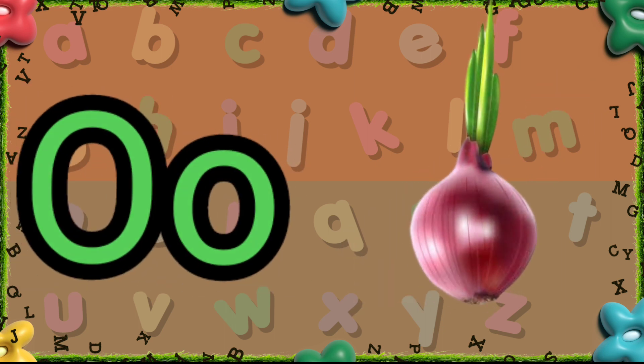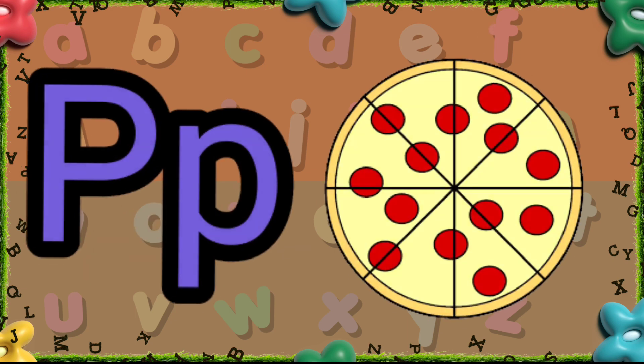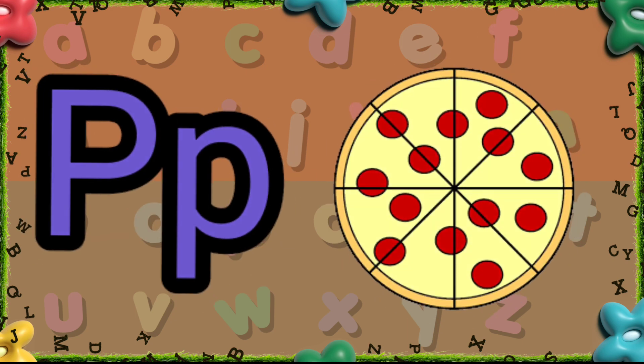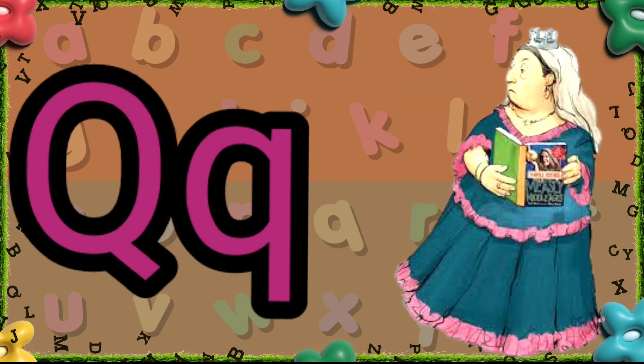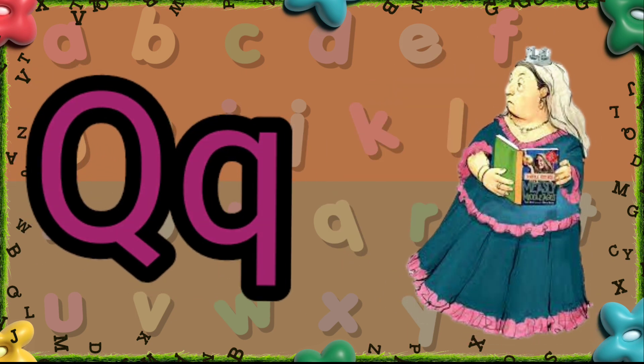O is for Onion. P is for Pizza. Q is for Queen.